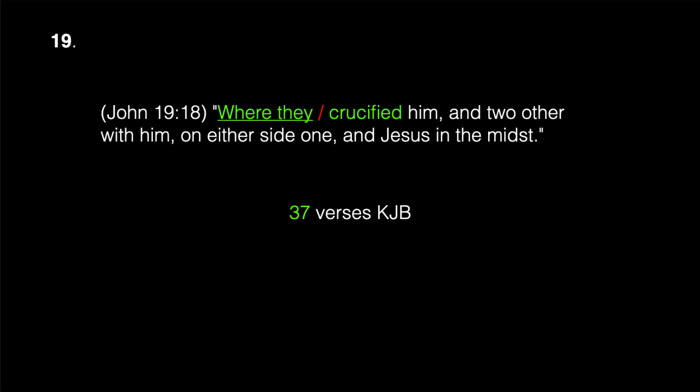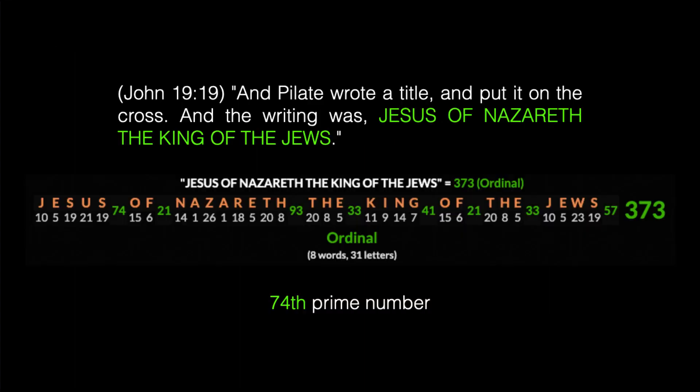The nineteenth occurrence of crucified is in John 19:18: 'Where they crucified him and two other with him on either side one and Jesus in the midst.' The phrase 'where they' — case sensitive — combined with 'crucified' appears in 37 verses in the King James Bible.